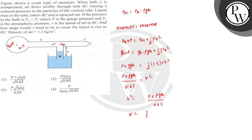So our value of V will be root over P plus rho GH divided by 0.65. In the options there is no such option here, so our answer should be number 4, which is the correct answer for this question.